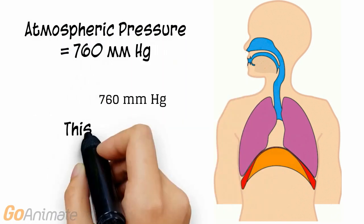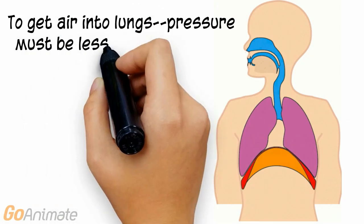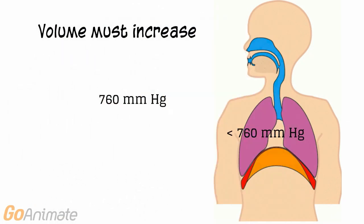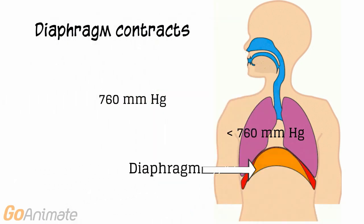The outside pressure, or atmospheric pressure, is at 760 mmHg. This is the pressure outside of the lungs. The pressure drops when lung volume increases. This happens when the diaphragm contracts, expanding the thoracic cavity.